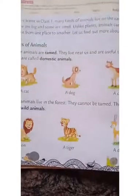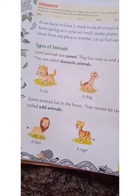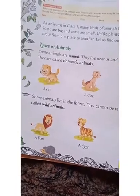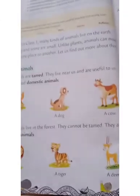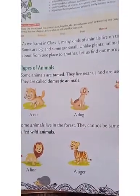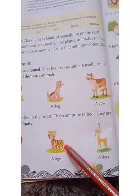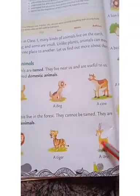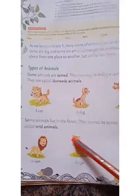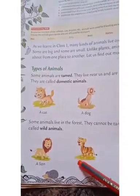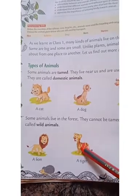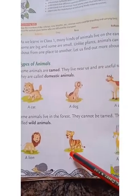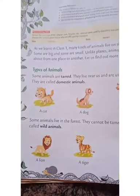Another type is wild animals. Some animals live in the forest. They cannot be tamed. They are called wild animals. The wild animals are forest animals — some animals live in the forest and they cannot be tamed.